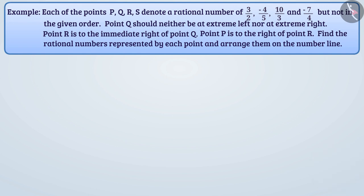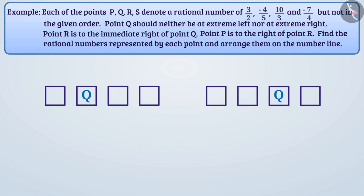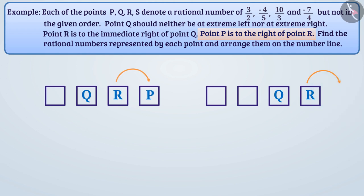Let me tell you. Let us first arrange the points P, Q, R, S in the correct order from the given information. The first information tells us that point Q should neither be at extreme left nor at extreme right — that is, it must be somewhere in the middle. We can say that point Q will be either at this place or at this place. From the second information, point R is at the immediate right of point Q. From the third information, point P is to the right of point R. In one case, point P can be placed to the right of point R, but in the other case it is not possible. So, those arrangements are wrong.